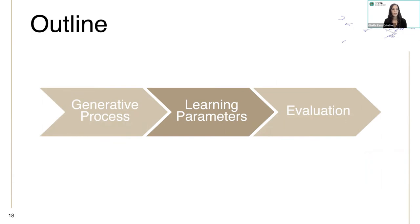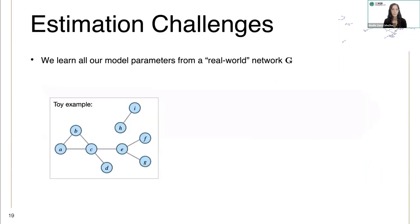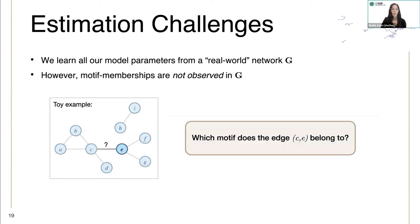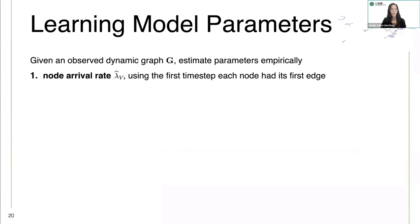In our learning parameters process, we estimate all our model parameters from a real-world network G. However, the motif memberships are not observed. In this toy example, we don't know which motif the edge CE belongs to. There are multiple wedges that lie on that edge.